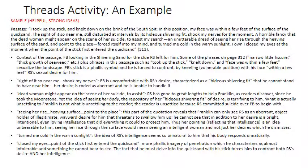You can see how 'took up the stick' is being analyzed — not just 'he picks up a stick,' but the landscape is sexualized and there's an undercurrent of symbolism affecting how we read his body in this scene. Next, 'disturbed at intervals by its hideous shivering fit shook my nerves': Franklin Blake is uncomfortable with Rosanna Spearman's desire, which is characterized as a 'hideous shivering fit' he cannot stand to have near him. Her desire is thus coded as aberrant — somehow abject, abnormal, an aberration from the norm.